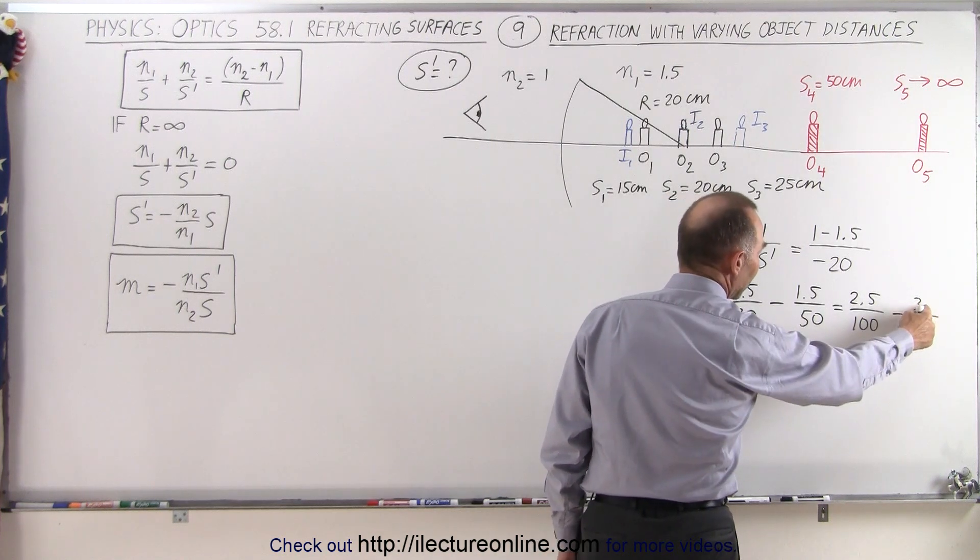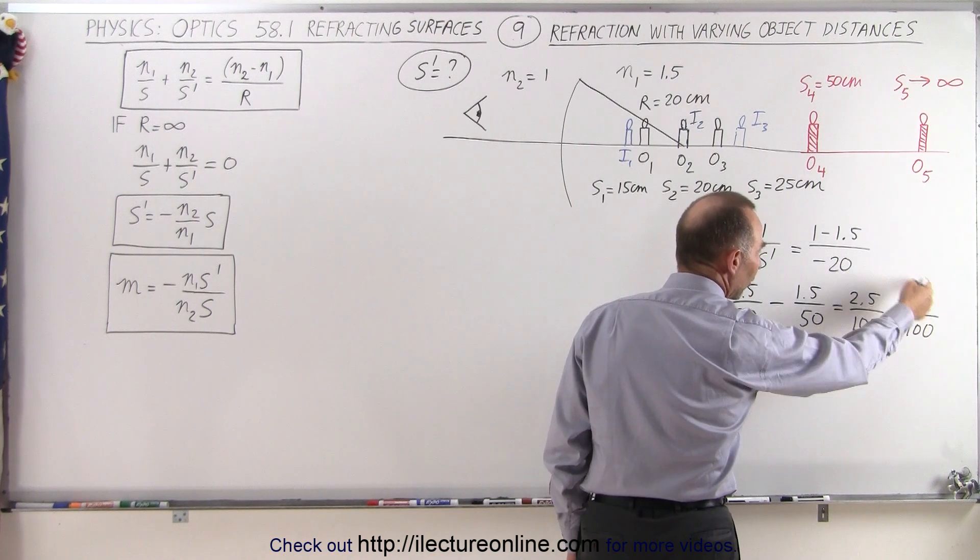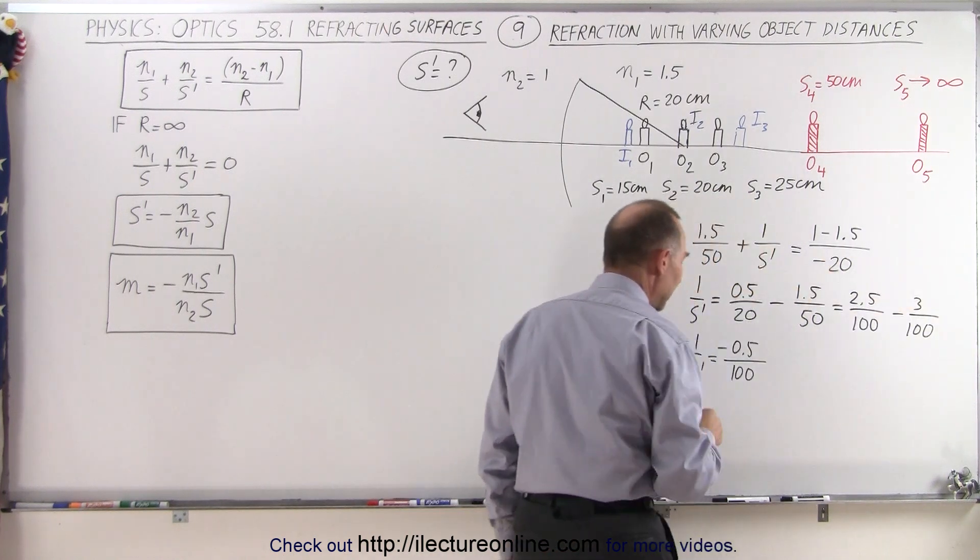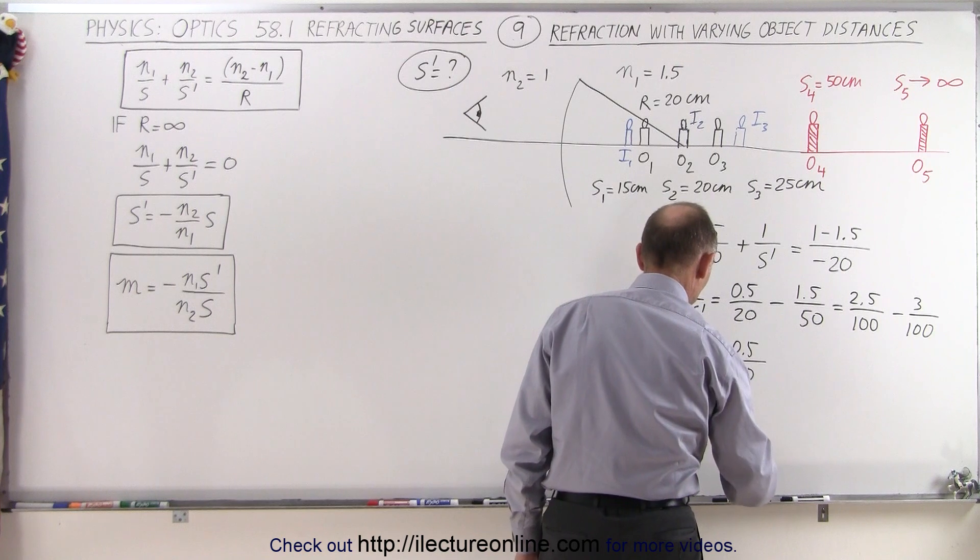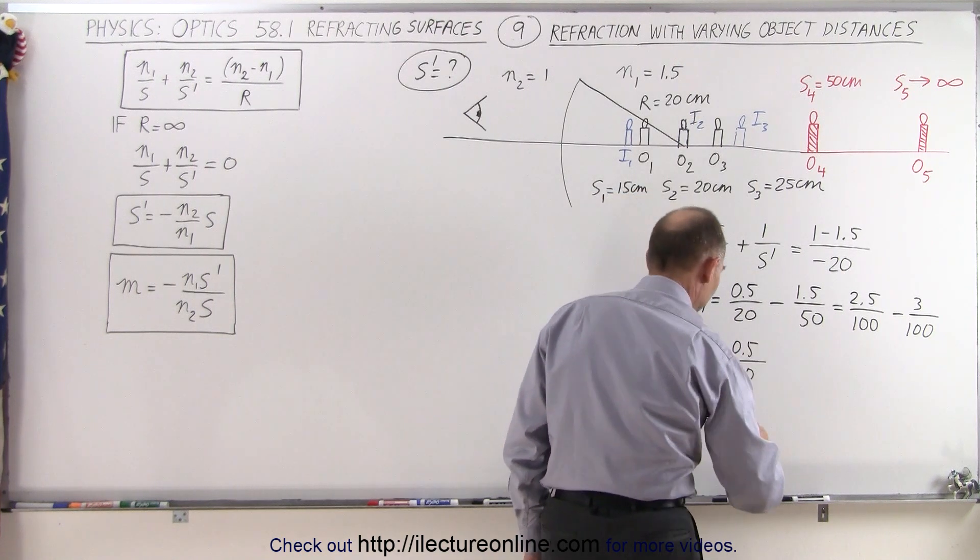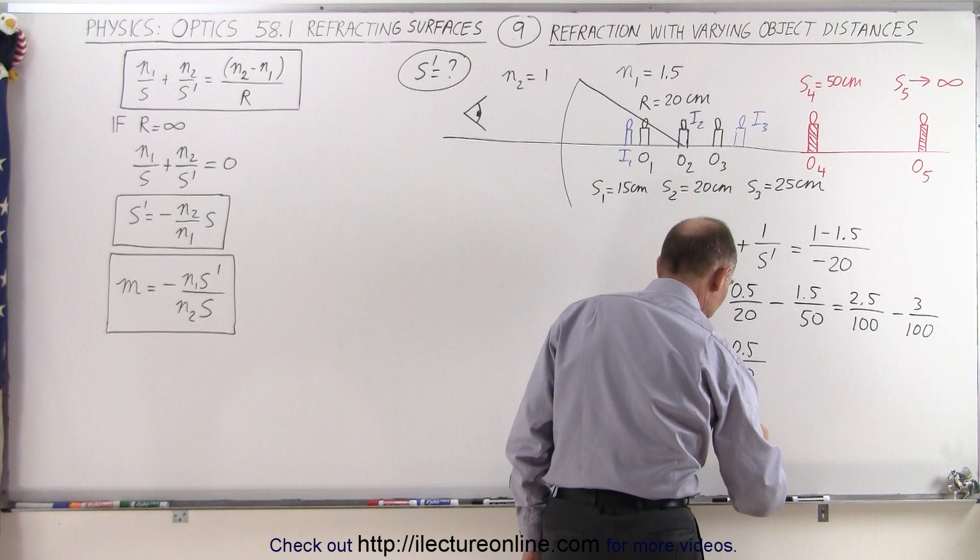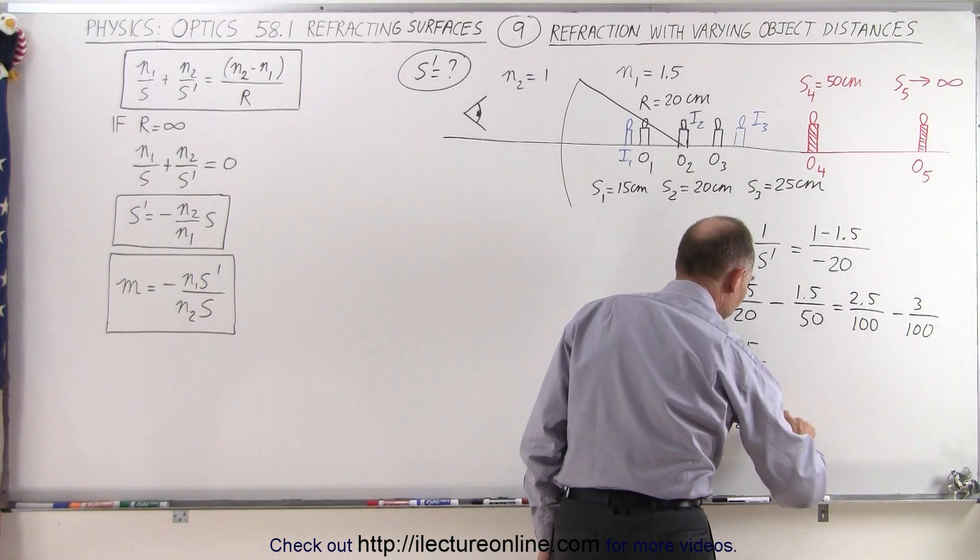Notice that this number in magnitude is still bigger than this one, so the result will be a negative quantity. And that means that s prime will be the inverse of that: 100 divided by 0.5, that would be 200, and the negative makes it minus 200 centimeters.